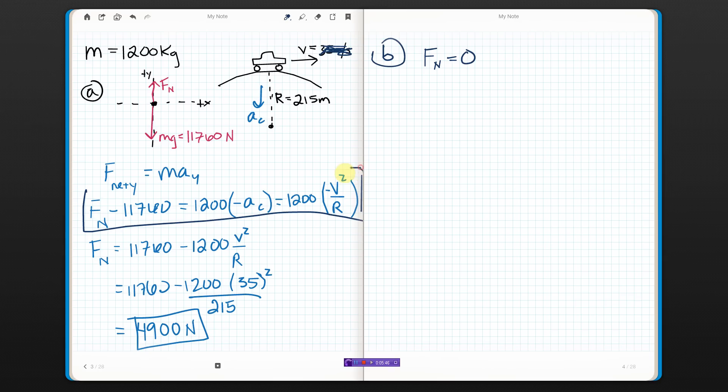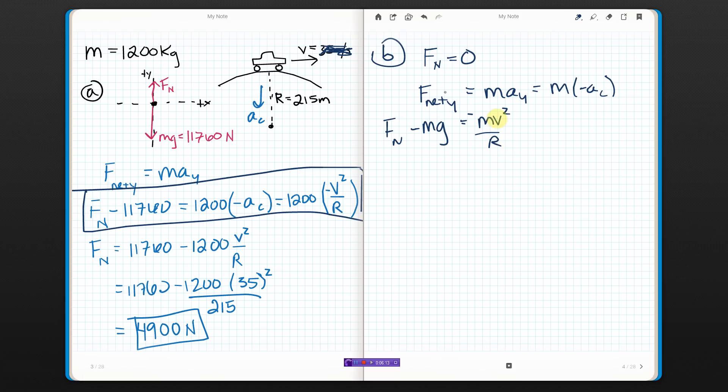In that case, all of this is the same. So that means Fn minus mg equals negative m v squared over r, and Fn is zero.